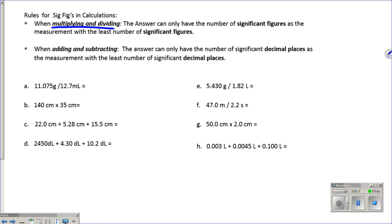If you're multiplying and dividing, you're going to use the least number of significant figures of your measurement. If you're adding and subtracting, you're going to use the least number of decimal places that are found in your measurement. So be careful to separate that out.